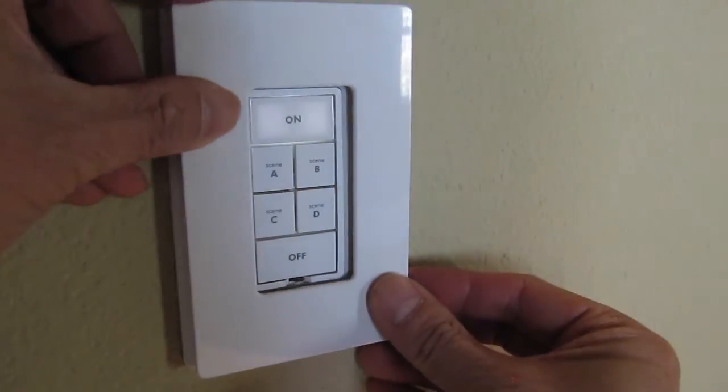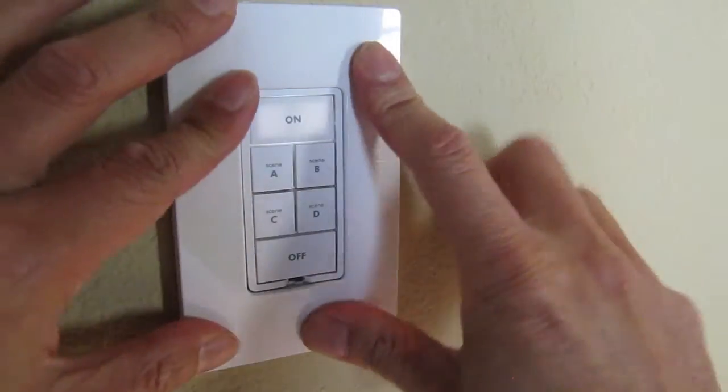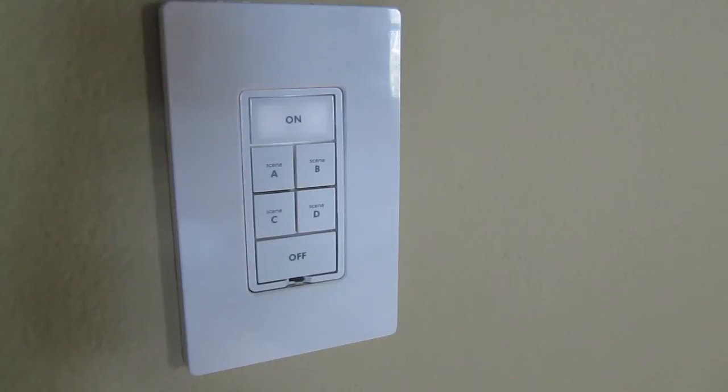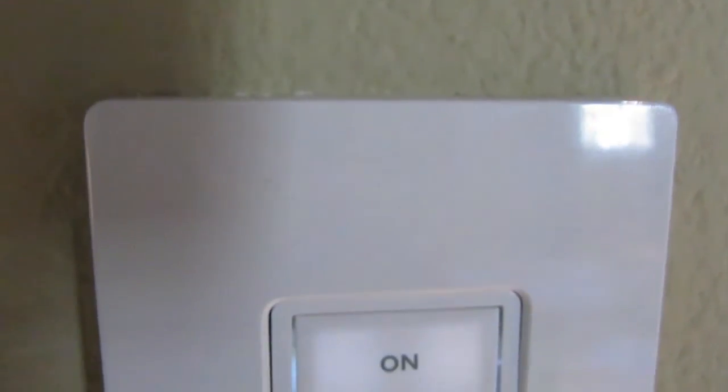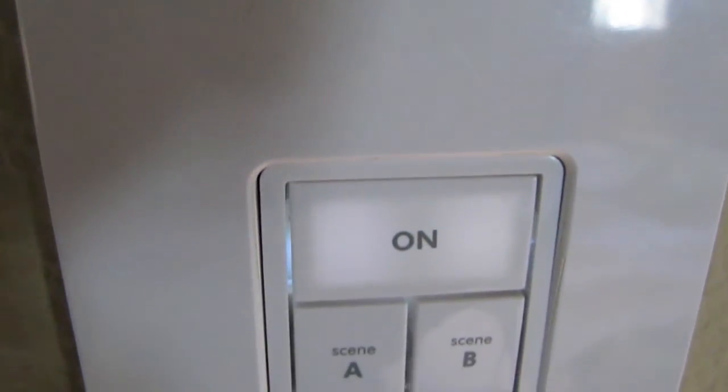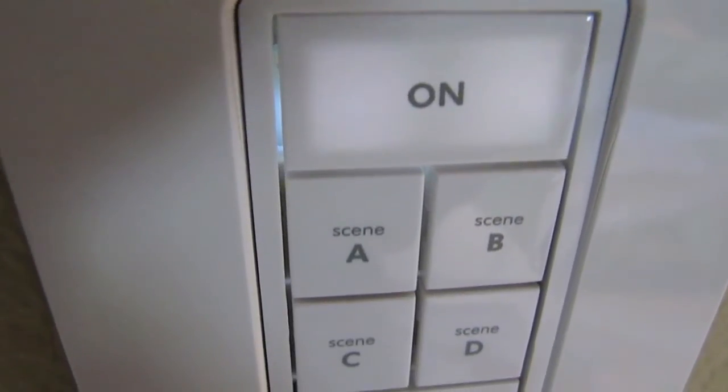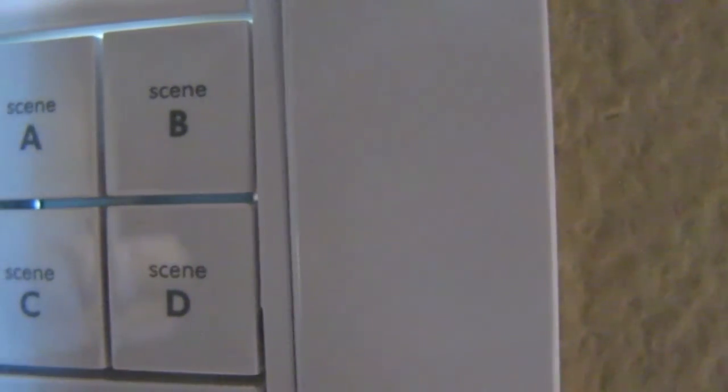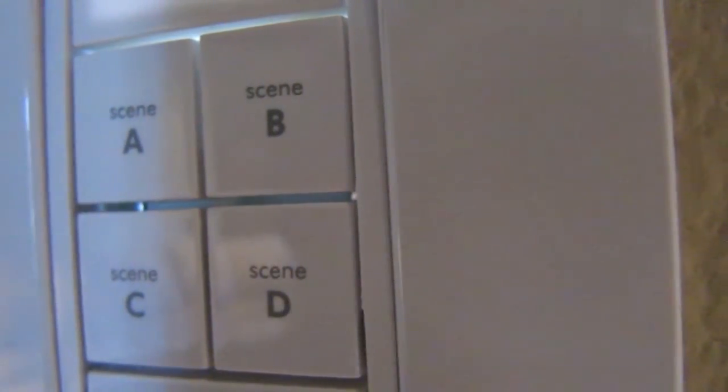But I'll save that programming for another video. I've really been happy with the keypad link dimmers which is why I bought another one to replace my old one. Now the only thing I need to do is reconfigure this to work with my remote control. I hope you enjoyed this tutorial and please subscribe to my channel for more how-to and gadget review videos.